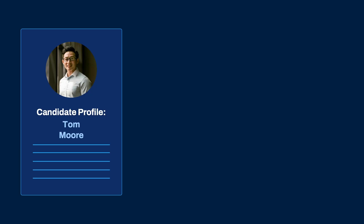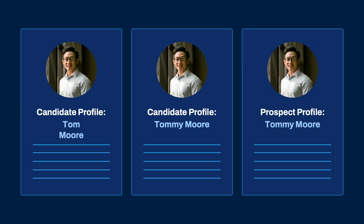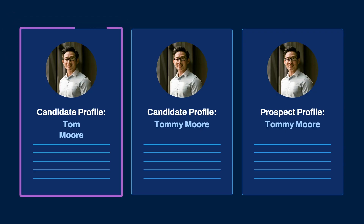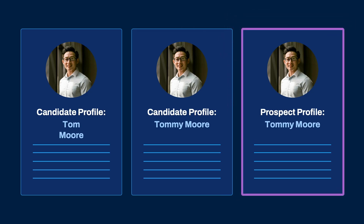Later, Tom's friend, an employee, refers him for a job, but this referral uses the name Tommy Moore. The referral then creates an additional active candidate record for him. Workday would have the following records related to the same Tom or Tommy Moore: two active candidate records — one for Tom Moore and another for Tommy Moore — and one prospect record for Tommy Moore.